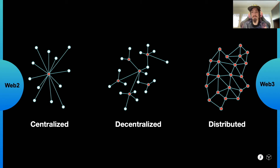Data, information, and knowledge are some of the most important assets of our connected era. They are critical to human development. That's why we believe they must be safeguarded, open, and in the hands of the people. But they aren't in the current model. Let's start with that problem. Currently, the Web 2.0 model is centralization.